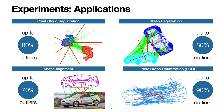We test the performance of GNC on four different applications, achieving state-of-the-art robustness in all four. In point cloud registration, GNC is robust to 80% outliers. In mesh registration, GNC is also robust to 80% outliers. In shape alignment, GNC achieves robustness against 70% outliers, while in pose graph optimization, GNC is robust against 90% outliers in the loop closures.